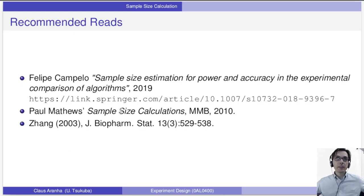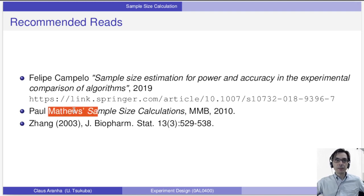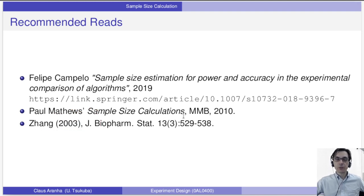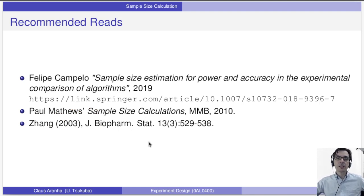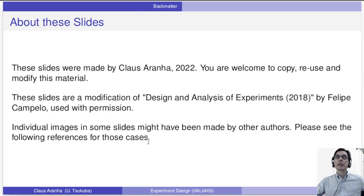Here are some other recommended readings: the algorithm comparison paper mentioned, sample size calculations by Paul Myttels available on the internet, and a paper by Zeng in the Journal of Biopharmaceutics on sample size calculation. These are some papers you can read to know more about this subject. Thank you very much for listening to this class, and I'll see you next time.